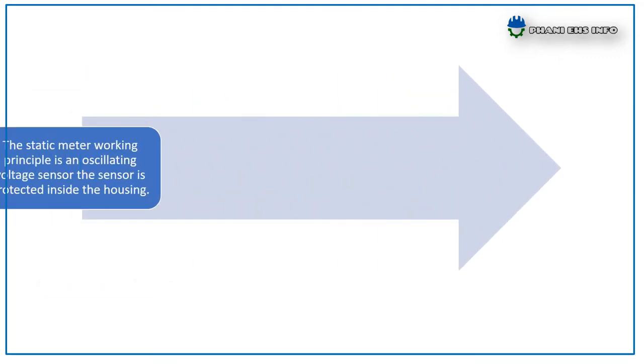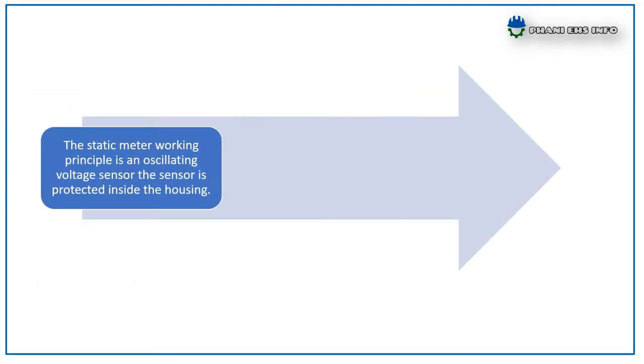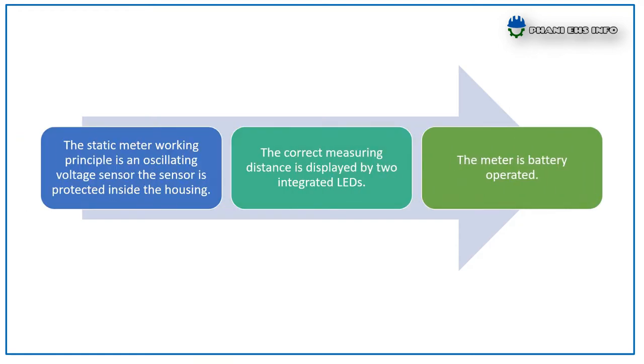How it works: The static meter working principle is an oscillating voltage sensor. The sensor is protected inside the housing. The correct measuring distance is displayed by two integrated LEDs. The meter is battery operated.